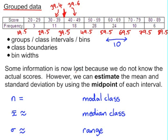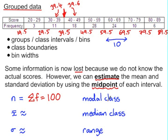Some information is now lost because we do not know the values of the actual scores. However, we can estimate the mean and standard deviation using the midpoint of each interval. We can ascertain the number of scores because that's the sum of all the frequencies. The modal class is the class with the highest frequency — that's 50 to 59. The median class is the class which contains the median.